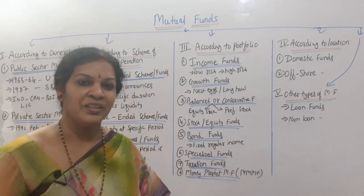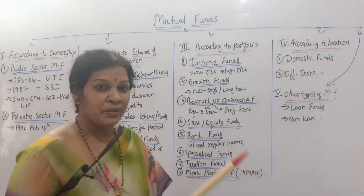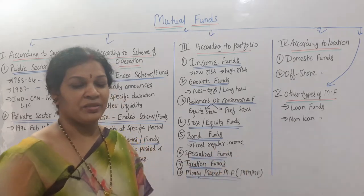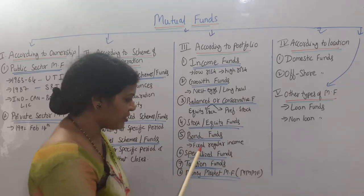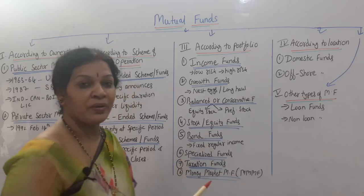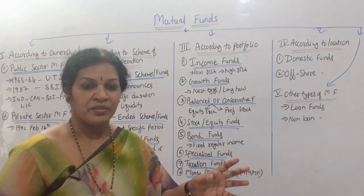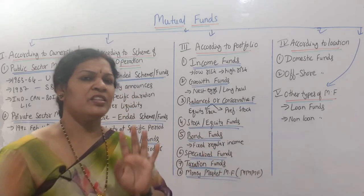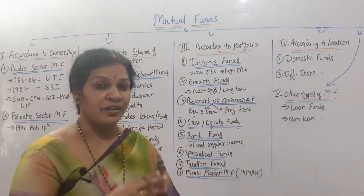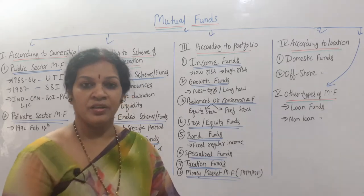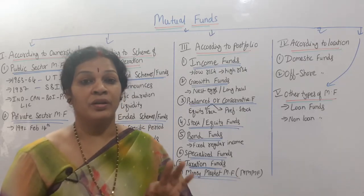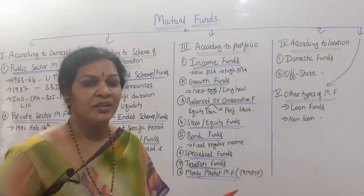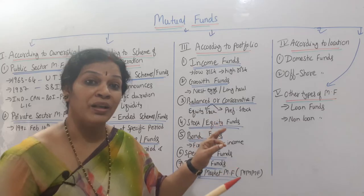Bond funds are just like a fixed and regular income — always safe. At the time of releasing bond funds, the face value of the bonds is always less at the beginning stage, but later it will increase. You always get fixed and regular income from bond funds. Specialized funds are where your investment is utilized for a specific purpose or industry — such as paper industry, electronics, computer industry, agriculture, or cotton mills. You should be careful whether that particular sector is going to run well.